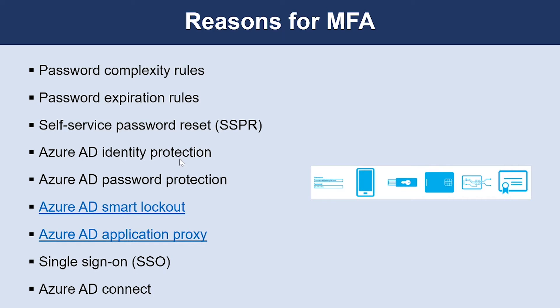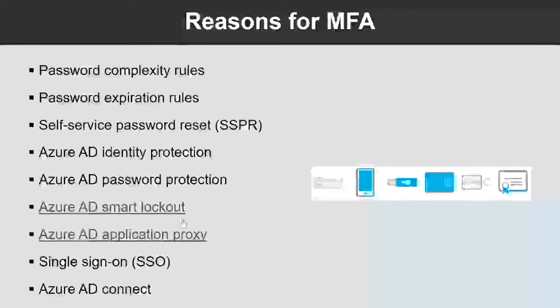Then we have Azure AD Identity Protection, which will help protect your organization's identities. You can configure risk-based policies that automatically respond to risky behaviors. These policies can either automatically block the behaviors or initiate remediation, including requiring password changes. Then we have Azure AD Password Protection, so you can block commonly used and compromised passwords via a globally banned password list. The next is Azure AD Smart Lockout, which helps lock out malicious hackers who are trying to guess your user's password or use brute force methods to get in. It recognizes sign-ins coming from valid users and treats them differently than those from malicious hackers and other unknown sources.